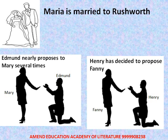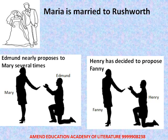Since Maria is now married to Rushworth, Henry decides to propose to Fanny. He is surprised to find that what began as a casual proposal turns into genuine love for her. He continues to pursue her, but Fanny refuses. Her uncle Sir Thomas is very disappointed that she has refused such a wealthy man, and as an indirect punishment, he sends her back to stay with her parents in their poor home.